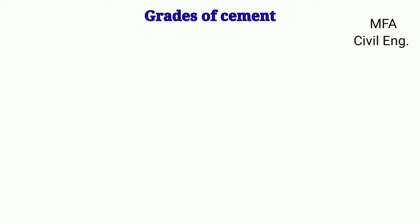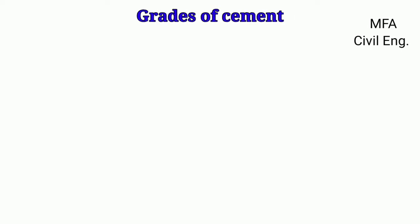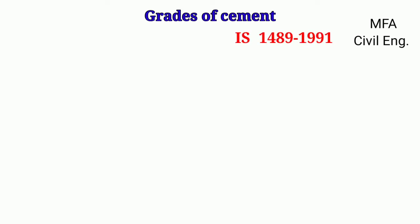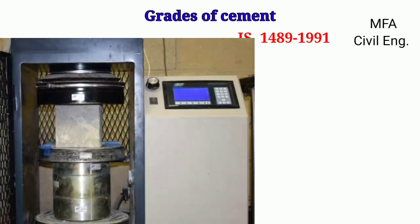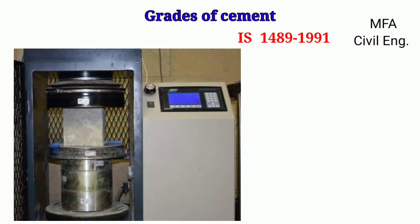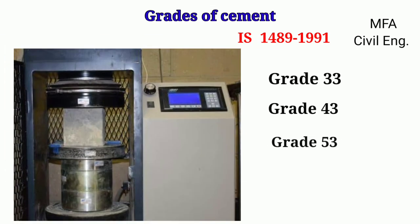Hello everyone, my name is Fazal, you are watching MFA Civil Engineering. Different grades of cement are specified by the Indian Standard 1489:1991. These are mainly based on the compressive strength of a particular cement — mainly 33, 43, and 53 grades are specified.